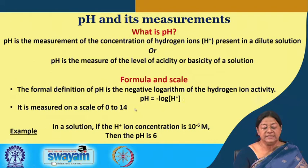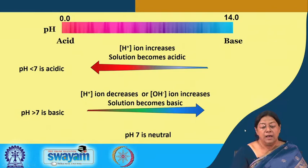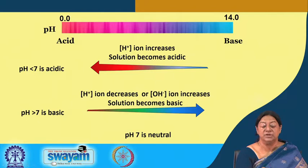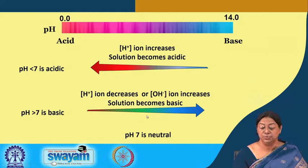pH is measured on a scale from 0 to 14. For example, if the hydrogen ion concentration is 10⁻⁶ molar, we get a pH equal to 6. As pH becomes less than 7 — with pH 7 being neutral — the hydrogen ion concentration increases and the solution becomes acidic. When we move toward the basic direction, the hydroxide ion concentration increases, H+ concentration decreases, and pH 7 corresponds to neutral.